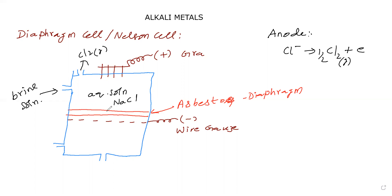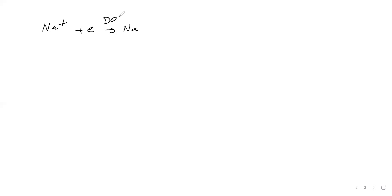The aqueous solution contains the cation Na⁺. That Na⁺ passes through the asbestos diaphragm and comes near to the wire gauze cathode. However, Na⁺ is not undergoing reduction at this cathode. In the previous Down's method, electrolyte was molten NaCl and Na⁺ went to the cathode and became sodium metal.